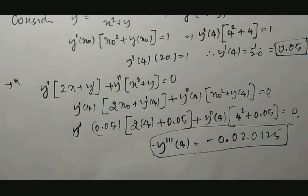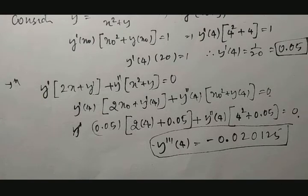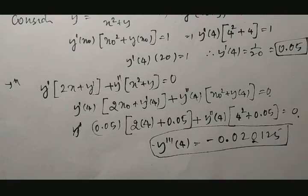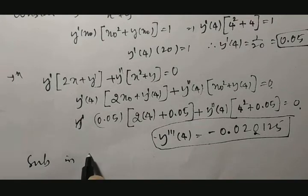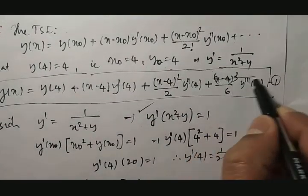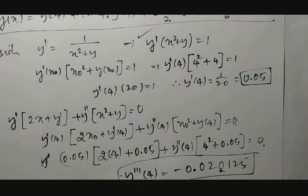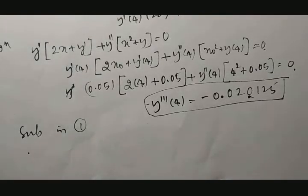As you can see, y''(4) = −0.020125 is a very small number, and the next term would be even smaller and would not make any significant change in the series. Therefore, we will take only two terms. We will now substitute the known values into equation number 1.